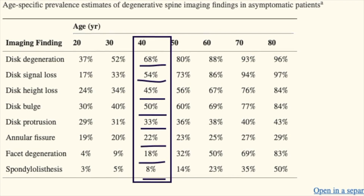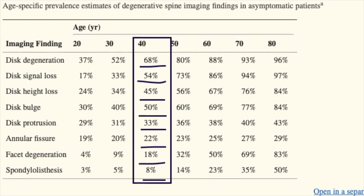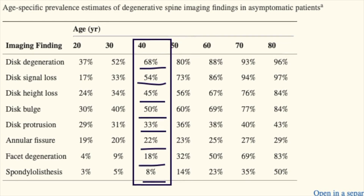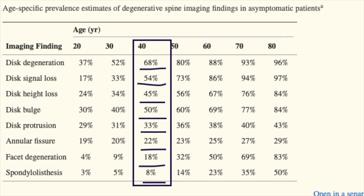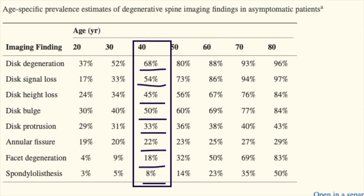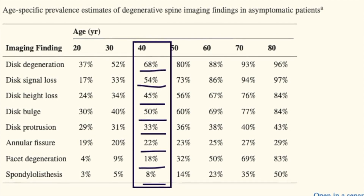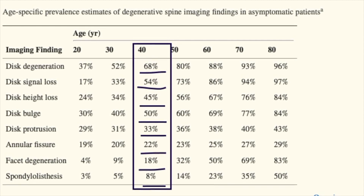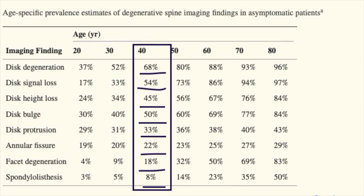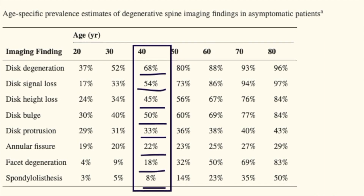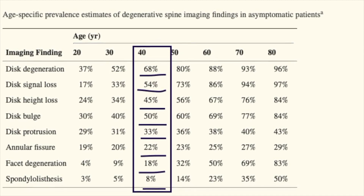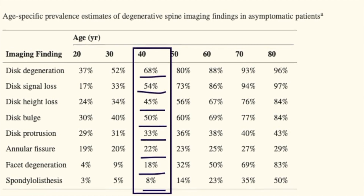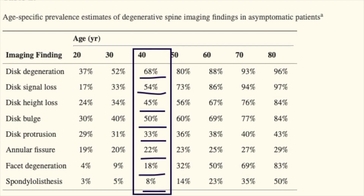I've added a chart showing age-specific prevalence estimates of degenerative spine imaging findings in asymptomatic patients. I've highlighted the 40s as a middle age example: if you're in your 40s, the chances of having disc degeneration is 68 percent, signal loss 54 percent, disc height loss 45 percent, disc bulges 50 percent, disc protrusion 33 percent, annular fissure 22 percent, facet degeneration 18 percent, and spondylolisthesis 8 percent. None of these people had any pain despite these findings.